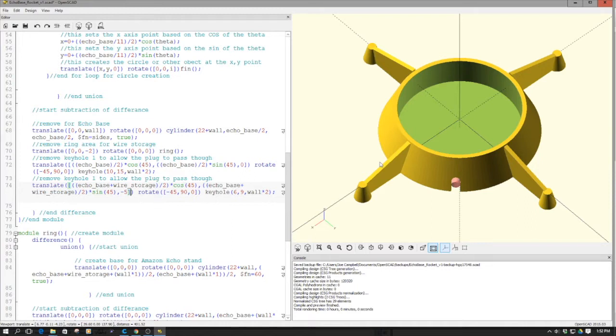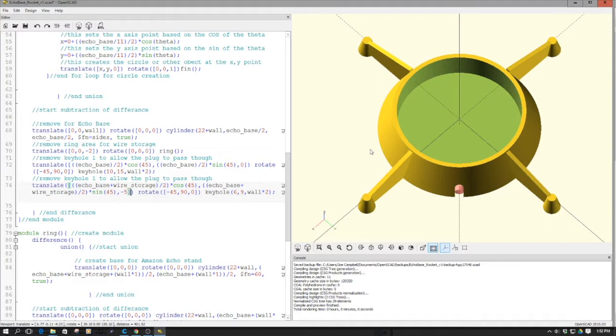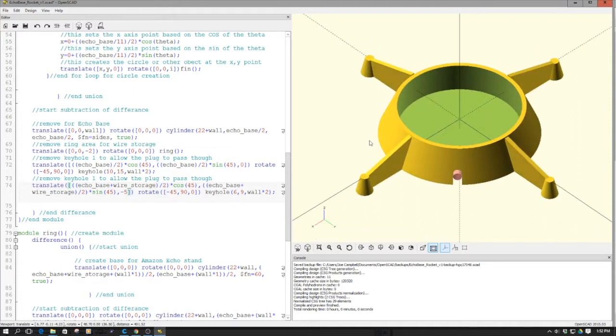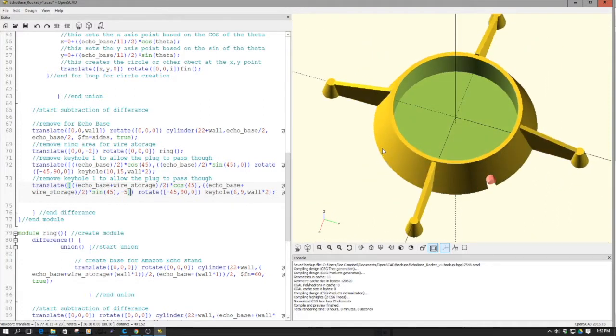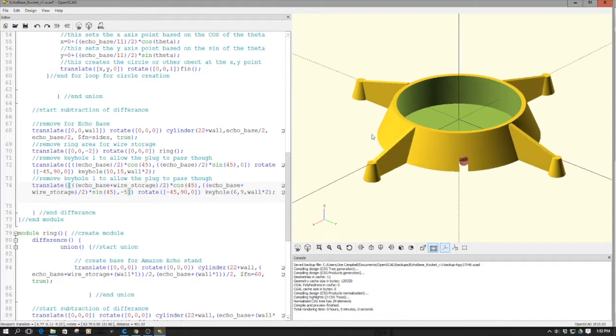Welcome to this edition of OpenSCAD by DIY3Dtech.com. In this episode, we're going to take a look at this. What is this, you might be asking? Well, this is a base, a bit of a sci-fi looking rocket base for an Amazon Echo.